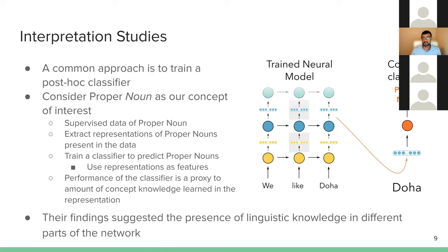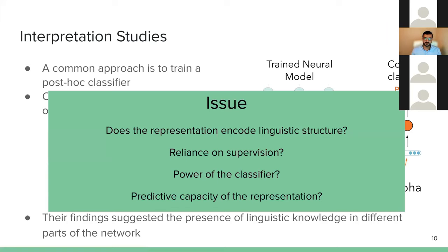Overall, this has been a very successful method and there are many papers on it. Their findings suggest that the model learns linguistic knowledge in different parts of the network. But there are a few issues: because we are using supervised data, a classifier, and rich representations, when a classifier performs well, is it really that the representations have the knowledge of the linguistic structure, or is it because of the supervision or the power of the classifier that it would learn any task?